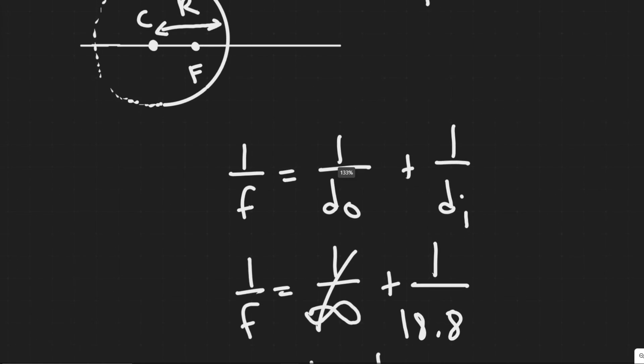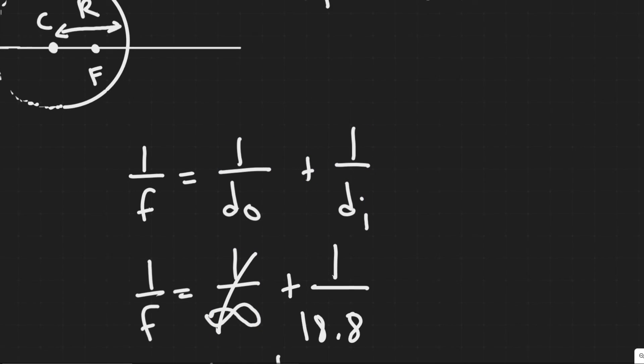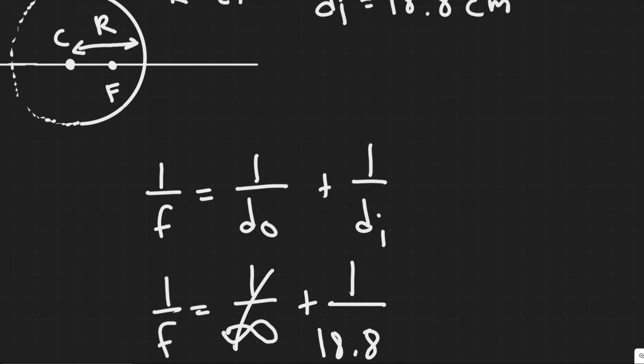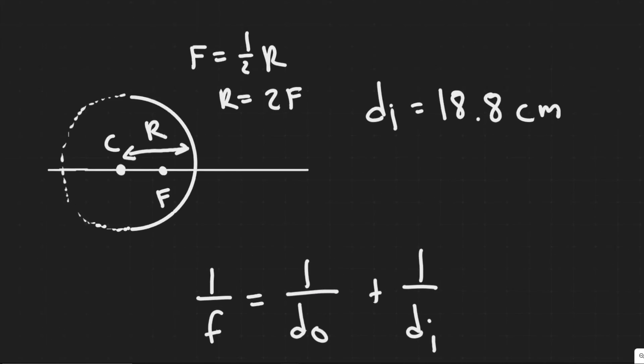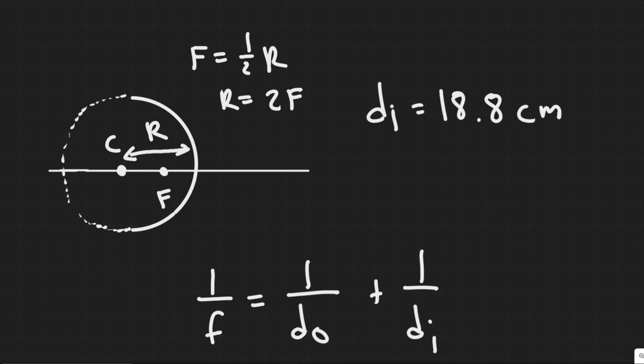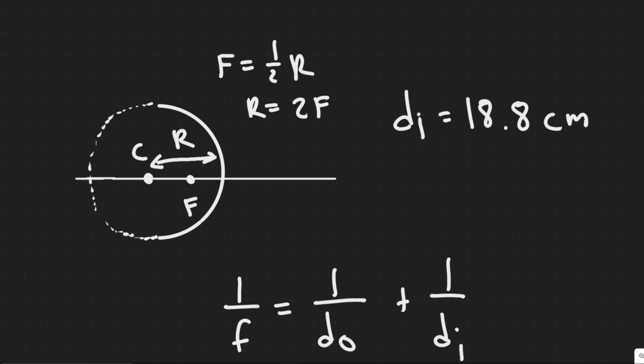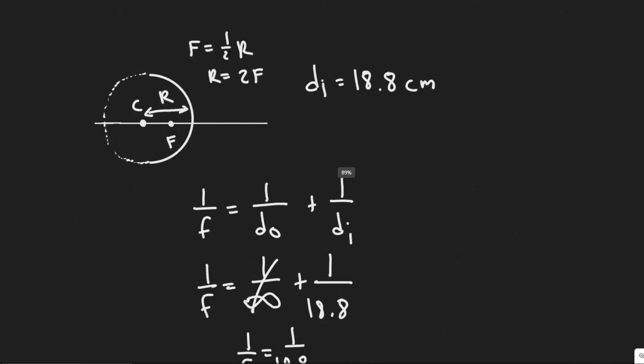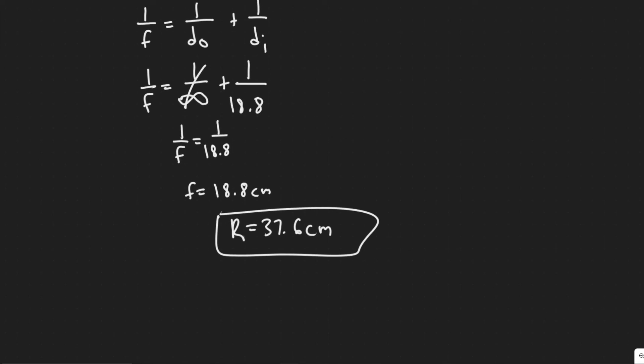The main takeaway from this problem is the mirror equation, understanding what D O, D I and F are. And once you get that, relating R and F, just by knowing that F is basically half of R, just half the distance. So a pretty similar problem, but yeah, so 37.6 centimeters, that's going to go ahead and be your answer. And hopefully you found this video useful.